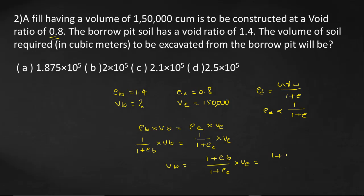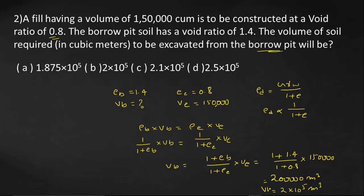Substituting values: V_B = (1 + 1.4) / (1 + 0.8) × 1,50,000 = 2.4 / 1.8 × 1,50,000 = 2,00,000 m³. So the volume of soil required to be excavated from the Borrow Pit is 2,00,000 m³, which equals 2 × 10⁵ m³.